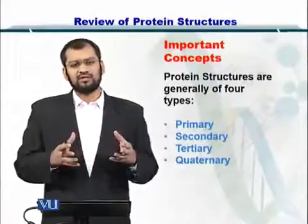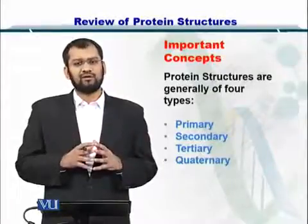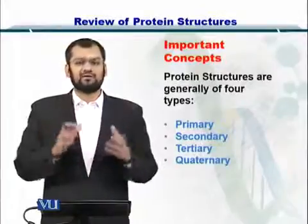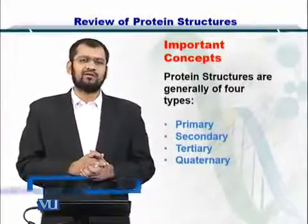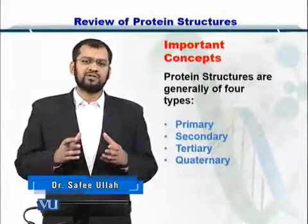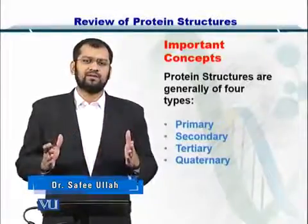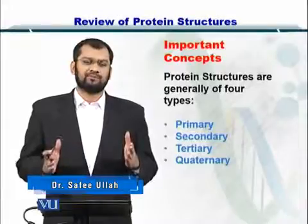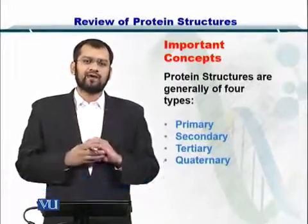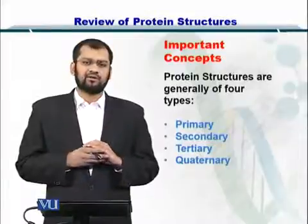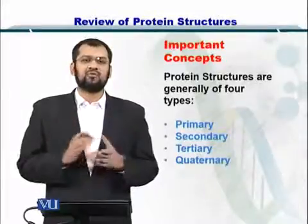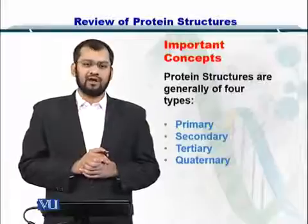These secondary structures can also come together to create bigger combinations and bigger structures — so these are the tertiary structures. Typically, a tertiary structure defines the complete structure of a protein. Now, if two proteins come together and create a complex, then a quaternary structure, or the four prime structure, is created.